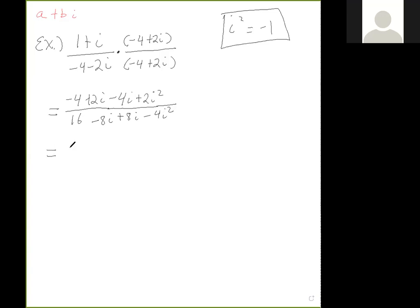Let's see what we get. I can combine these terms. In the numerator: -4 - 2i, and the 2i² becomes 2 times -1, so -4 - 2 gives us -6 - 2i. In the denominator, the -4i² becomes +4, so 16 + 4 makes 20.